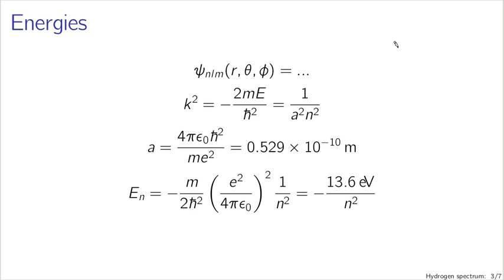As we went through the solution of the time-independent Schrödinger equation, we introduced a variety of constants and requirements — in particular, periodicity in the phi solution, and convergence and well-behavedness of the angular and radial solutions — which gave us quantization conditions used to construct n, l, and m. We defined k² = 2mE / ℏ², and found that constant had to equal 1/(a²n²), where a is the Bohr radius, about half an angstrom.